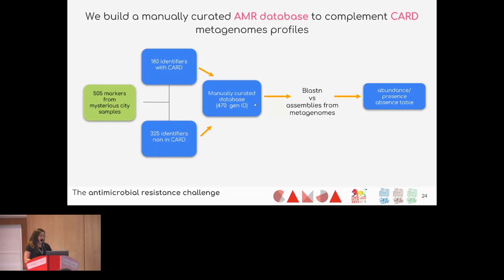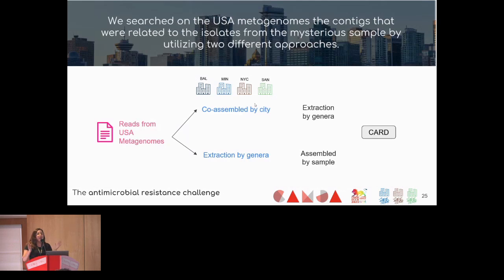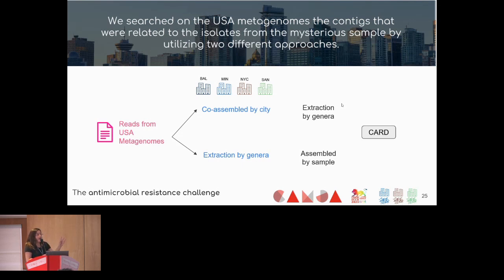We decided to extract contigs related to the isolates in the mysterious sample, focusing on Enterobacter, Klebsiella, and Escherichia coli, using two approaches. First, co-assembly of all metagenomes by city, then extracting Klebsiella, Enterobacter, and E. coli contigs and annotating with CARD. Second, extracting contigs by genus using Kraken output, assembling those contigs, then annotating with CARD.